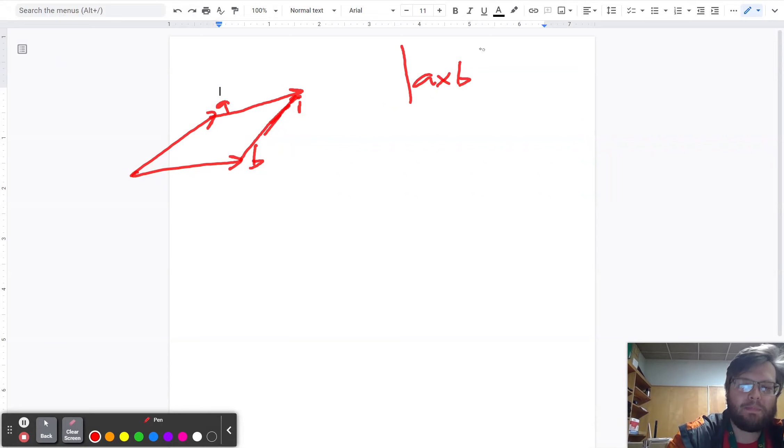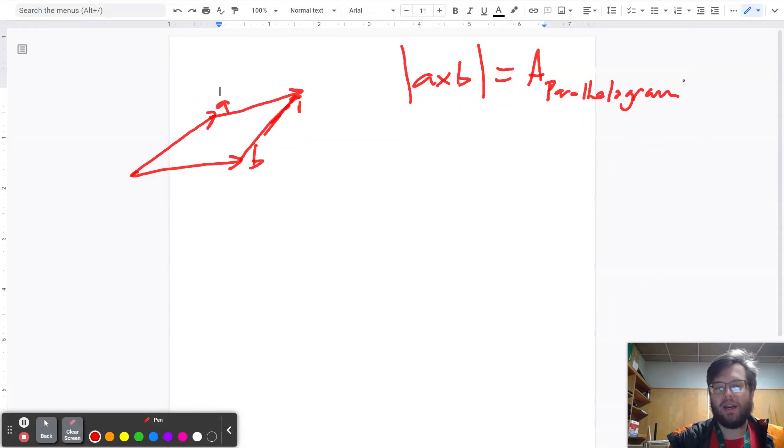And the magnitude of A cross B is the area of the parallelogram that's formed by adding A and B to create the parallelogram. Now, what I want to look at now is a slightly different question.